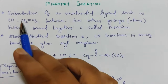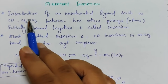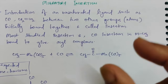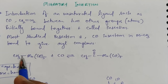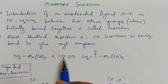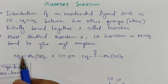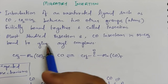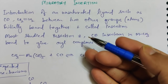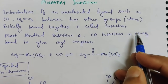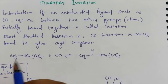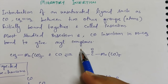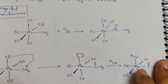The next mechanism is migratory insertion — the introduction of an unsaturated ligand such as a carbonyl ligand or ethylene ligand between two other groups or atoms initially bound together. For example, if you have CH3 bonded to the metal directly and you insert CO as a carbonyl ligand, it gets inserted in between this sigma bond. The most studied insertion is CO insertion into a metal-CH3 bond, which gives you an acyl complex.